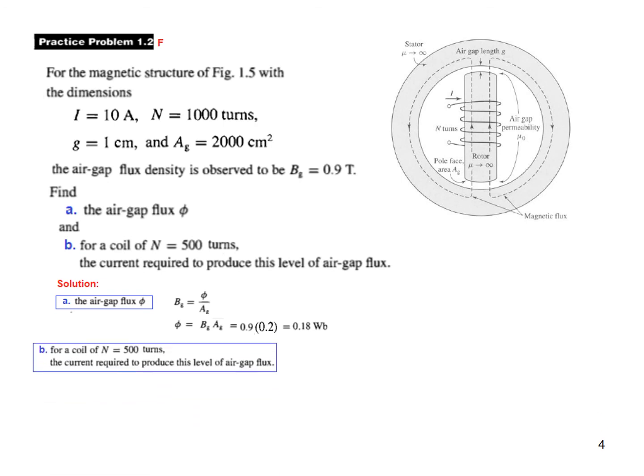Now the second part: the coil has been reduced to 500 turns, so we'll use this formula to find the current. From here we just plug in this value φ, this, and 500, I we have to find. This is 4π×10⁻⁷, area is 0.2 meter square.